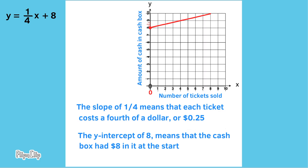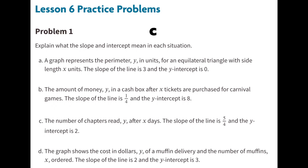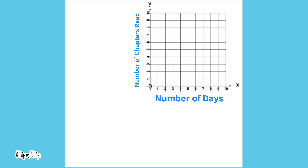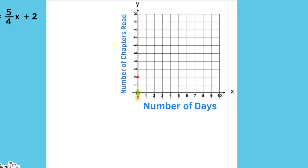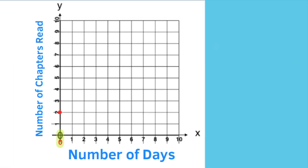Part C: The number of chapters read y after x days. The slope of the line is 3/4 and the y-intercept is 2. I wrote the equation y = (5/4)x + 2 to represent this situation. With the y-intercept at 2, zero days shows that two chapters are already completed. By the fourth day, seven chapters are completed.